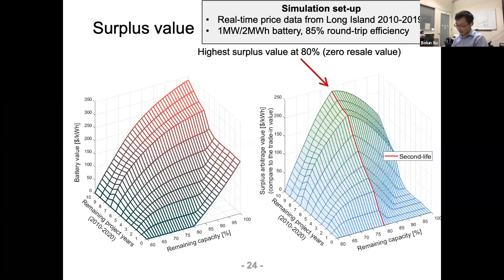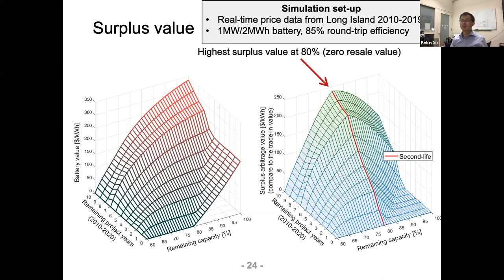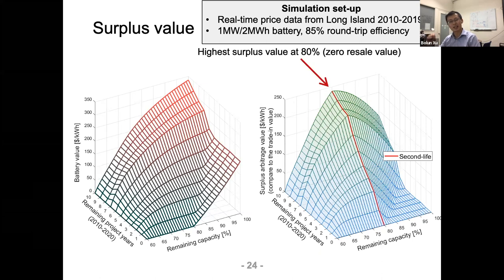Another angle is the surplus battery value: subtracting the resale value from the total value gives the additional value beyond resale — the extra value from operating the battery above selling it immediately. This shows that the battery at 80% remaining capacity — just expired warranty, the newest second-life battery — gives the most surplus value across all scenarios.